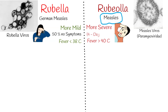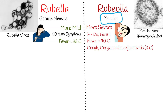Measles also has classic symptoms including 4-day fever and the 3 C's: cough, coryza, and conjunctivitis. These symptoms worsen in severity over 4 days of appearing. Coryza means inflammation of the mucous membrane inside the nose, with common symptoms being a stuffy nose, runny nose, and sneezing.